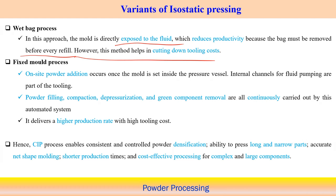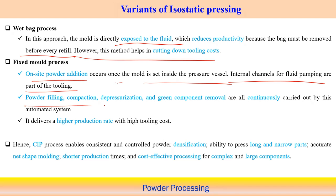Another variant is the fixed mould process, where the mould is fixed and powder addition is on one side. Once the mould is set inside the pressure vessel, internal channels are used for fluid pumping as part of the tooling, and then powder filling, compaction, depressurization, and green component removal are all continuously carried out using an automated system. This delivers very high production rate with high tooling cost.